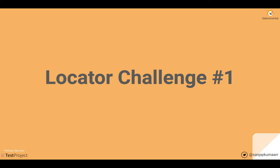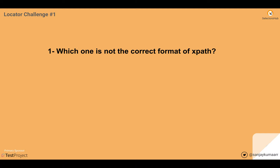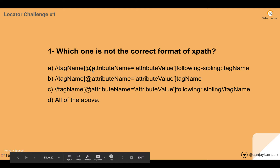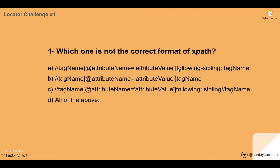Which one is not the correct format of XPath? I'm sure you all have learned about the format and syntax of XPath, so let's see which is not the correct format. The very first one: double forward slash, tag name, at-rate attribute name equals attribute value, then written as following-sibling double-colon tag name.